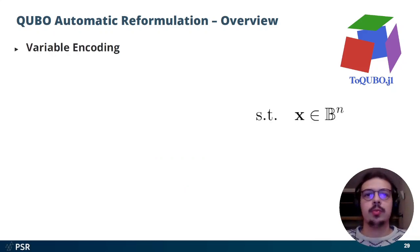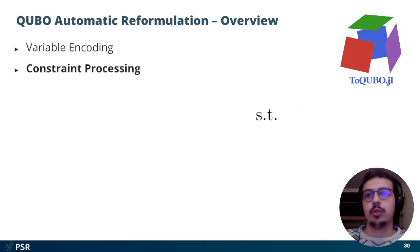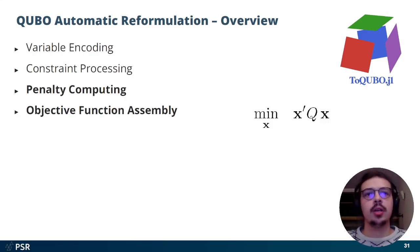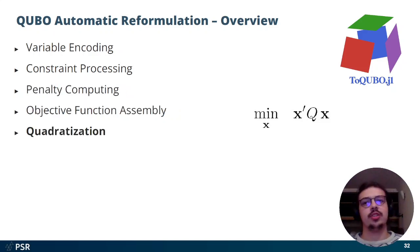It performs variable encoding, because all the variables must be binary. It does constraint processing, because you can't have any constraints. You must encode them using penalty terms to be assembled into the objective function. And also, if needed, it performs quadratization, which reduces the degree of the resulting polynomial.